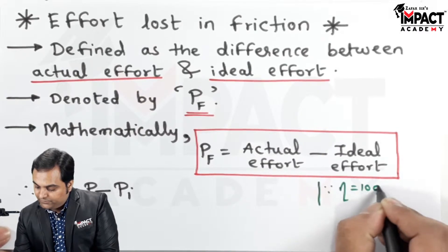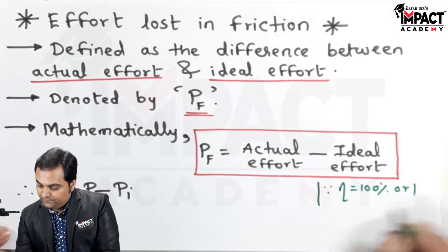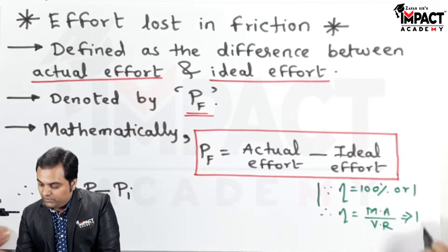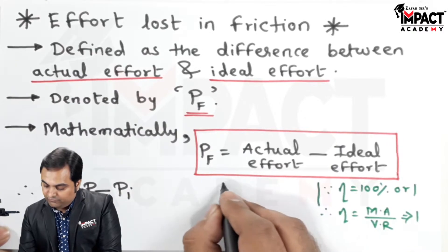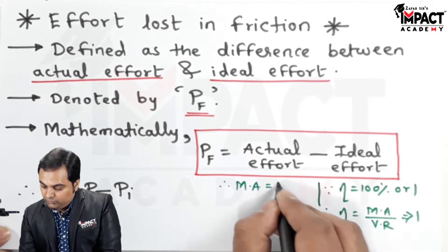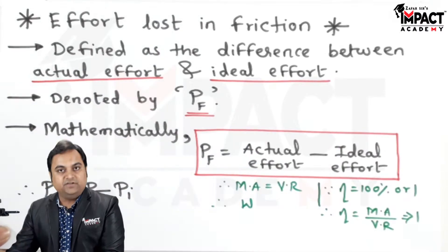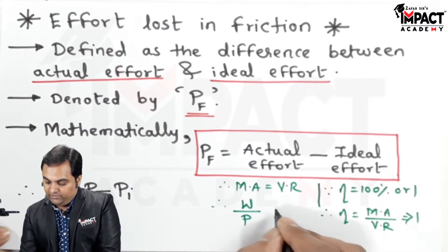So efficiency would be 100% or 1. Therefore efficiency is Ma upon Vr, and since it is 1, we can say that Ma is equal to Vr. And this Ma is the mechanical advantage given by load upon effort.